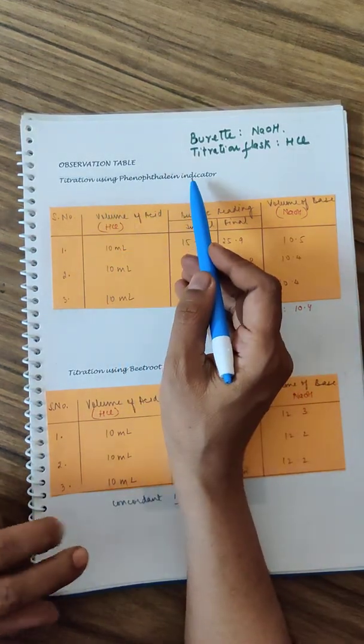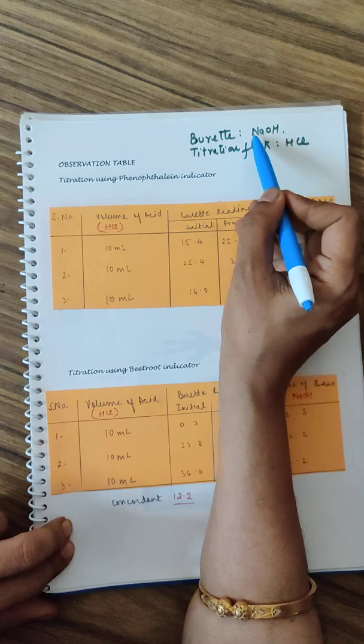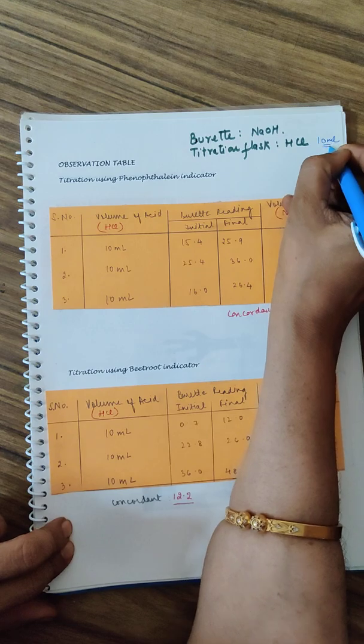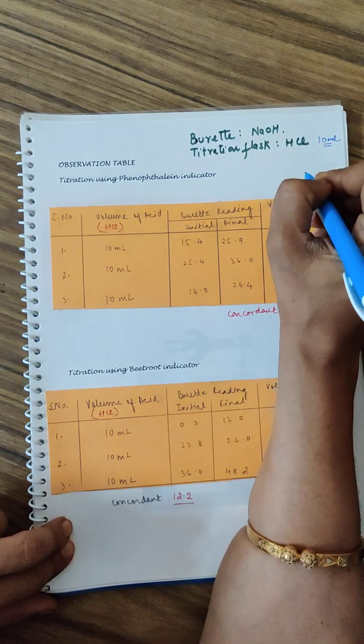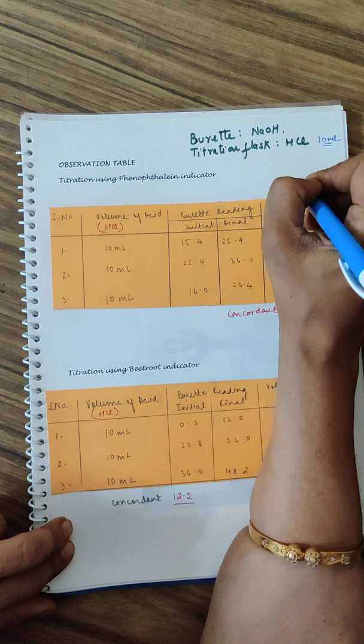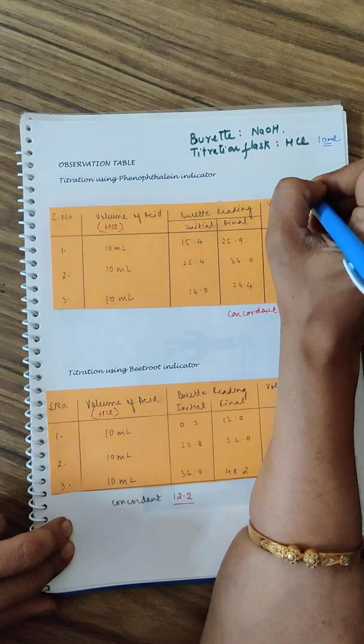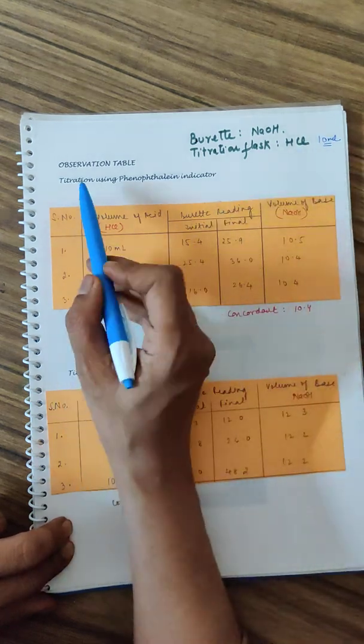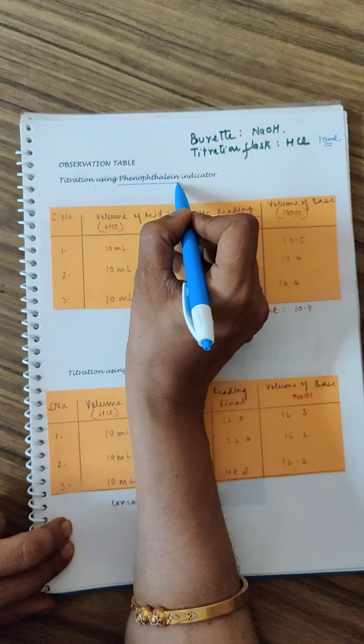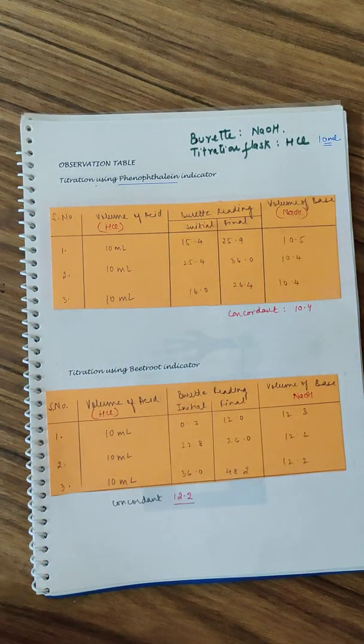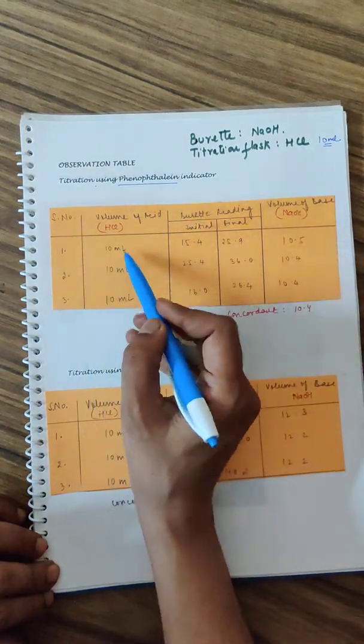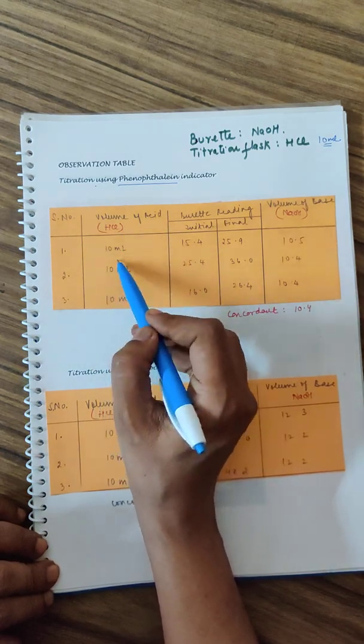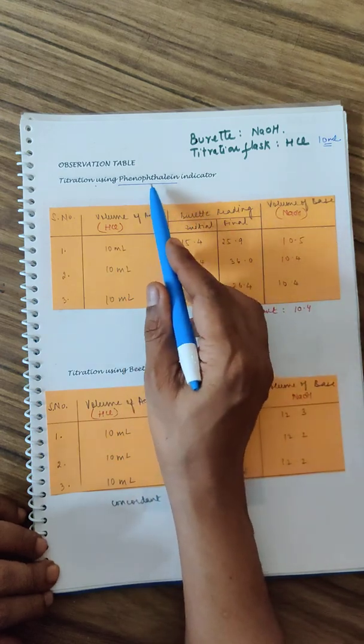Now comes the titration and the observation table. In your burette you will be taking NaOH, in your titration flask you will be taking HCl 10 ml plus the indicator. If you do not know how to perform the titration, I repeat, it is already on my channel. Titration using phenolphthalein is what you will do first because you will be comparing your natural indicators with phenolphthalein.